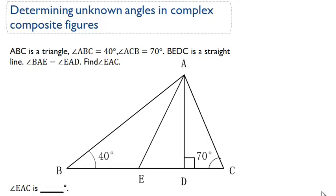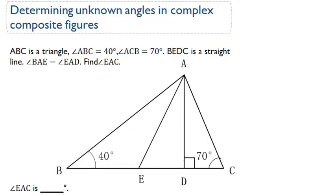Determining unknown angles in complex composite figures. In this problem, we're given that ABC is a triangle. We're given angle ABC, which is 40 degrees, and angle ACB, which is 70 degrees. We're also given that BEDC is a straight line — this line down here is a straight line.